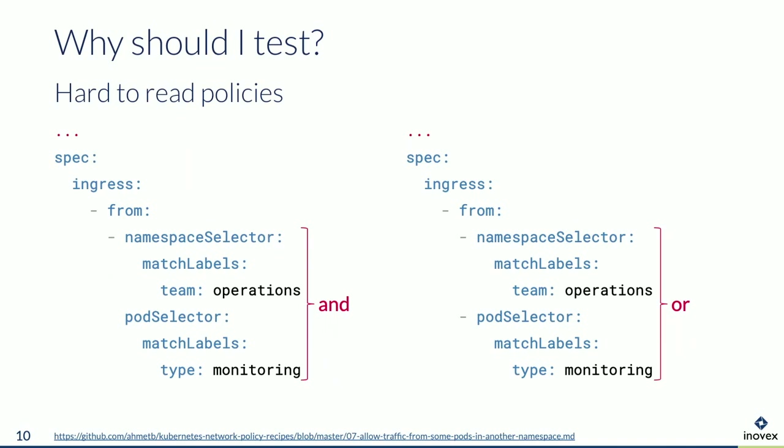Policies are not always easy to read. Looking at two policies — who can spot the difference? Both are valid. The left one without a dash is an AND combination, and the one with the dash is an OR. Both policies look pretty similar — just a little dash that can easily be overlooked, but they have a completely different meaning in the end. It's not trivial to spot such things.